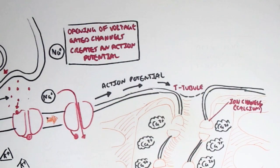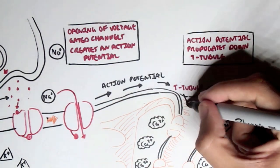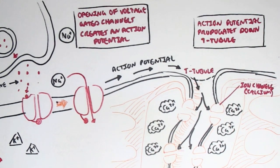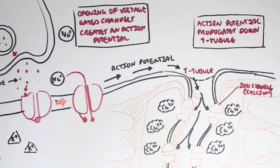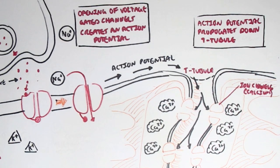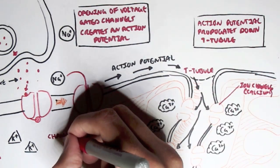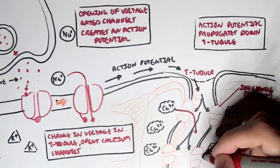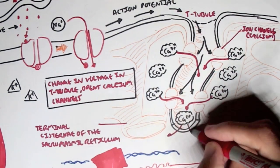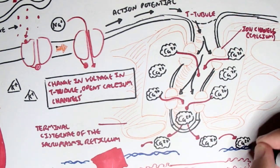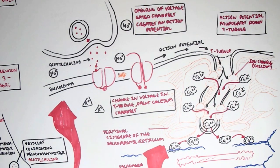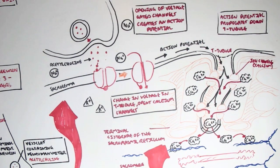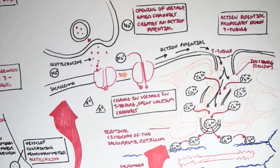The action potential can then propagate down the T-tubule. When the action potential travels down the T-tubule, it will cause the calcium ion channels — which were previously closed — to open up, because there's a change in voltage in the T-tubule. When these calcium channels open, calcium will then move out from the terminal cisternae into the T-tubule, where it will travel down and essentially go bind onto the thin filaments. Calcium and ATP will help with muscle contraction. To understand how they help, please click on the link for the sliding filament theory, which looks at contraction at a molecular level — at a sarcomere level.